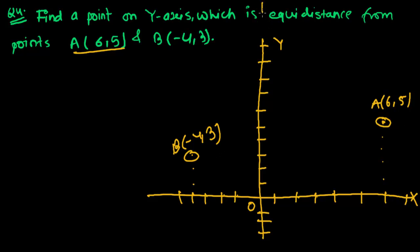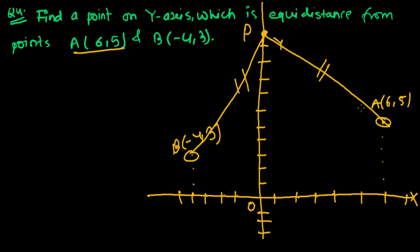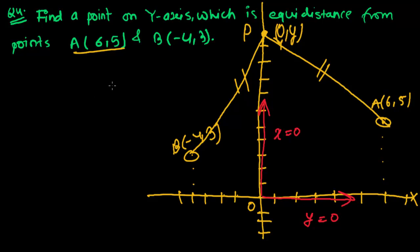Now we have to find a point that lies on the y-axis and is equidistant from A and B. Suppose this point is P on the y-axis. Since P is on the y-axis, its x-coordinate is always 0. Let's say its y-coordinate is y, so P is (0, y). Recall: on the x-axis the y-coordinate is always 0, and on the y-axis the x-coordinate is always 0.